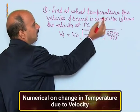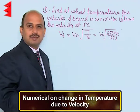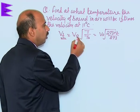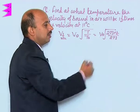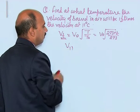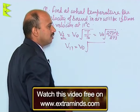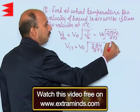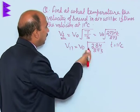Next problem: find at what temperature the velocity of sound in air will be 1.5 times the velocity at 11°C. The velocity at any temperature T is given by V_T = V₀ × √(T / T₀), which equals V₀ × √((273 + T) / 273). At 11°C, V₁₁ = V₀ × √(284 / 273).